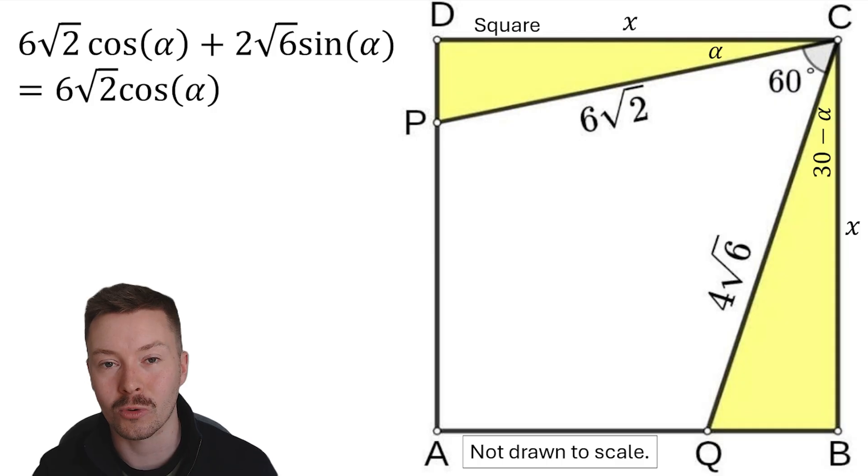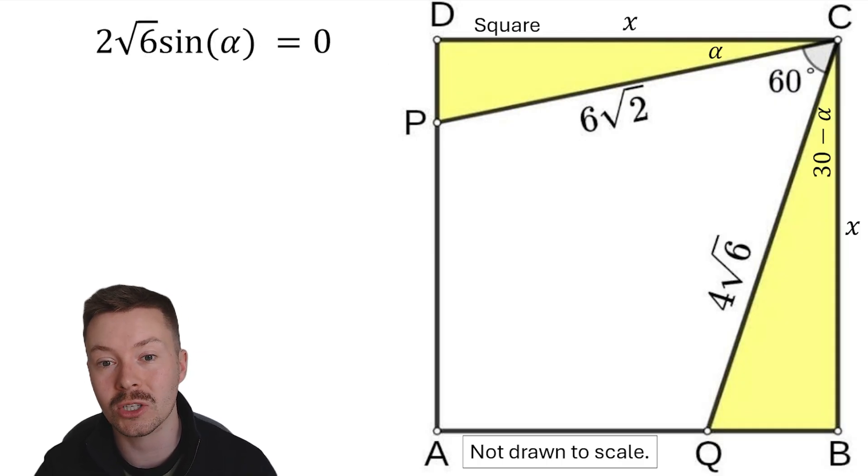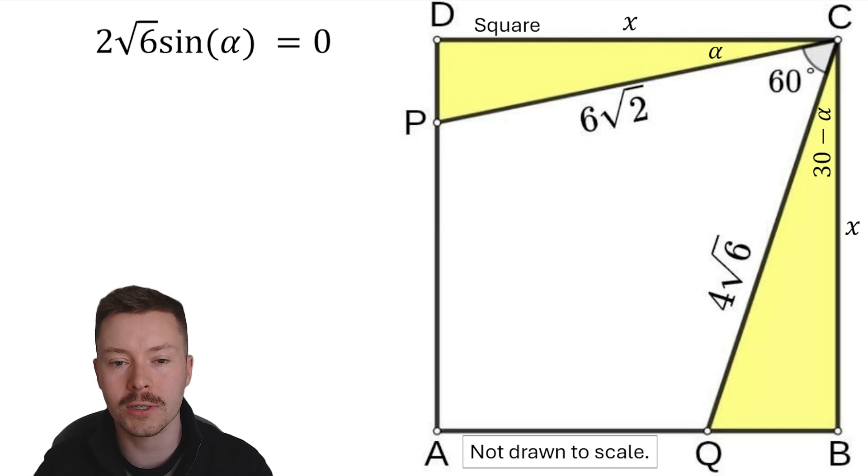Subtracting 6 root 2 cos alpha from both sides of that equation, we are going to get 2 root 6 sine alpha is equal to 0. That means, if I divide both sides by 2 root 6, that sine alpha must be equal to 0.